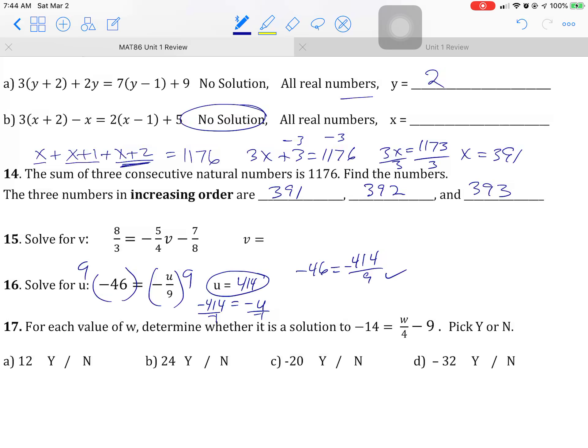Alright, it says for each value of W, determine whether it is a solution. Pick yes or no. So they want you to put a 12 in for W and see if it's a solution or not. So negative 14 equals 12 over 4 minus 3. Negative 14 equals 3 minus 9 is not going to give you that. So that's a no. Negative 14 equals 24 over 4 minus 9. Negative 14 equals 6 minus 9. That's not going to work either.